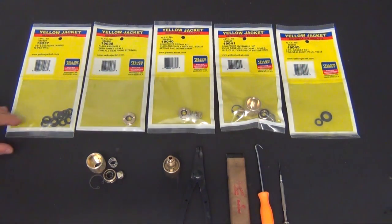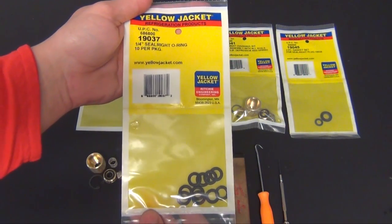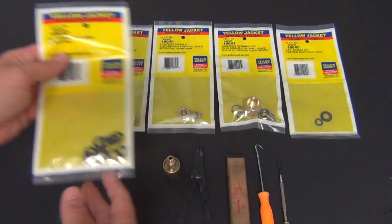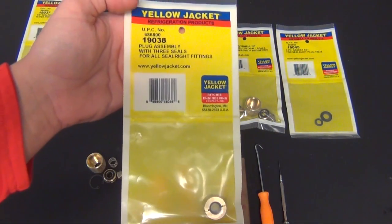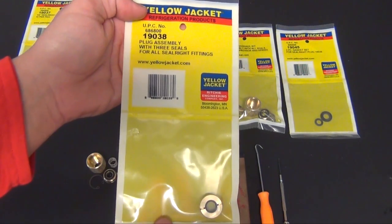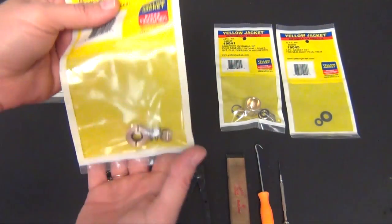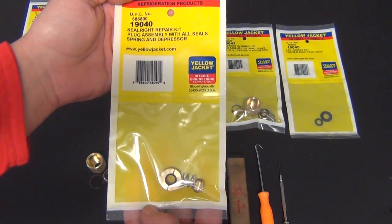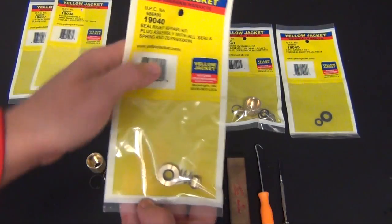Here are the different kits that we have available. We have the 19037 which is a 10-pack of the Sailrite O-rings. We have the 19038 which is the plug assembly with all three seals. We have the 19040 which is a Sealrite repair kit with the plug assembly with all the seals, the spring and a depressor.